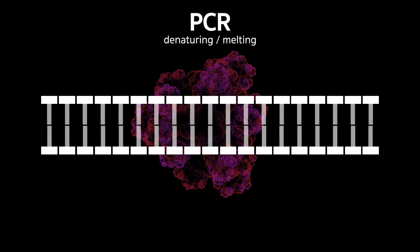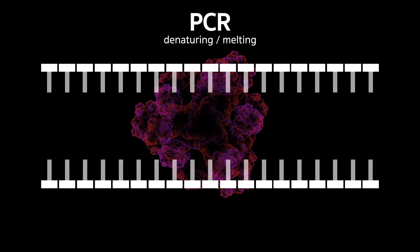So the first step in PCR would be denaturing, heating the DNA to around 90 degrees C. And this breaks the hydrogen bonds, separating it into two separate strands.